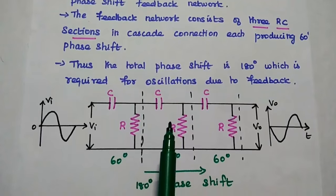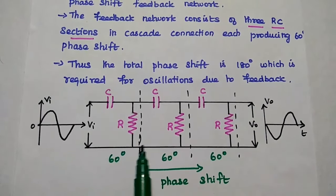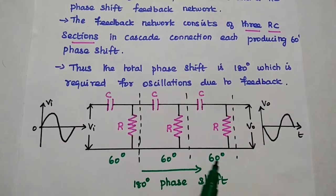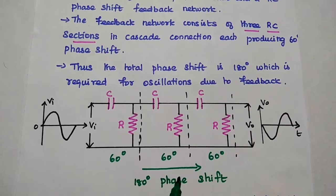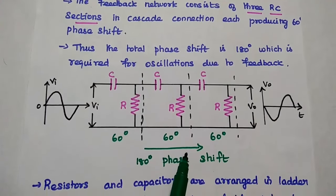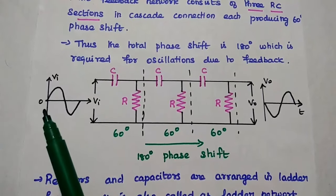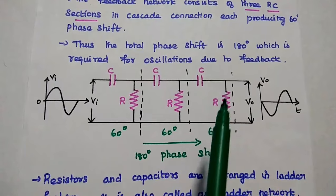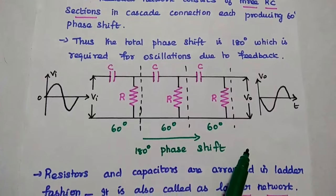This is the RC phase shift feedback network. It consists of 3 RC sections in cascade connection, each producing 60 degree phase shift. Then we can get the total phase shift as 180 degrees, which is required for oscillations due to the feedback network in the oscillator. Each section produces 60 degree phase shift, and at the end we can get a 180 degree phase shifted output signal.